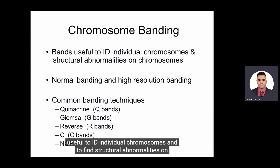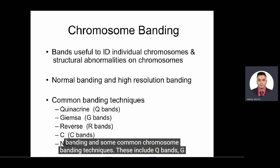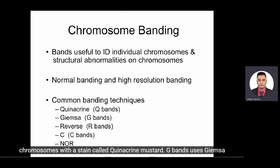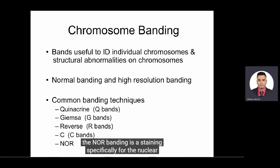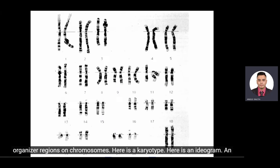Chromosome banding can be useful to identify individual chromosomes and to find structural abnormalities. We can use normal banding and high-resolution chromosome banding. Common banding techniques include Q bands, G bands, reverse bands, C bands, and NOR bands. Q bands use quinacrine mustard staining; G bands use Giemsa staining; reverse bands are the negative image of Q or G bands; C bands stain specifically for the centromere regions; and NOR banding stains specifically for the nuclear organizer regions.